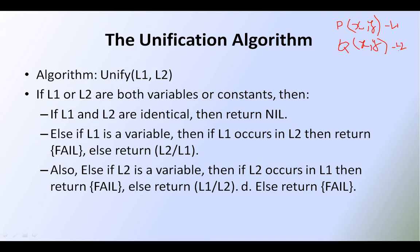These two are not identical because even though the number of arguments are the same and the same type of arguments, the literals are different — one is P and another is Q. So these two are not identical, so we never return nil here. Coming to the second rule: if L1 is a variable and L1 occurs in L2, then return fail; else return L2 comma L1.